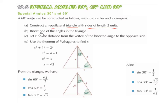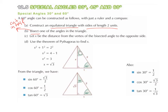Part B: Bisect one of the angles in the triangle. Bisect means cut in half. If we bisect the angle at the top by dropping a perpendicular, we end up cutting the triangle into 2 equal right-angled triangles. This angle will be 30 degrees, because 60 degrees divided by 2 is 30 degrees. So we have a 90 degree angle here, a 60 degree angle here, and a 30 degree angle here.